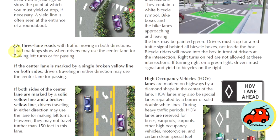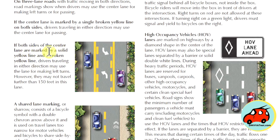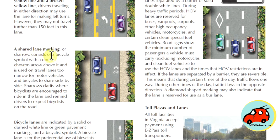On three-lane roads with traffic moving in both directions, road markings show when drivers may use the center lane for left-hand turns or passing. If the center lane is marked by a single broken yellow line on both sides, drivers traveling in either direction may use the center lane for passing. If both sides are marked by a solid yellow line or a broken yellow line, drivers may use the lane for making left turns, but may not travel further than 150 feet in that lane. A shared lane marking, or sharrow, consists of a bicycle symbol with a double chevron arrow above it, used for travel lanes too narrow for motor vehicles and bicycles to share side by side. Sharrows clarify where bicycles are encouraged to ride in the lane and remind drivers to expect bicyclists on the road.